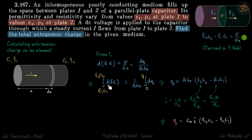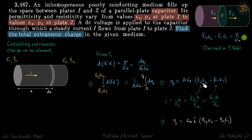We integrate both sides. Since the left side is d(E·ε), we only need the initial and final values of field and epsilon. The right side integrates from 0 to Q. Simplifying, we get A·ε₀·(E₂ε₂ − E₁ε₁). E₂ and E₁ are not given directly, but ρ and I are given. Using the current density formula: I = J·A and J = E/ρ, we can find E. So E₂ = ρ₂·I/A and E₁ = ρ₁·I/A.